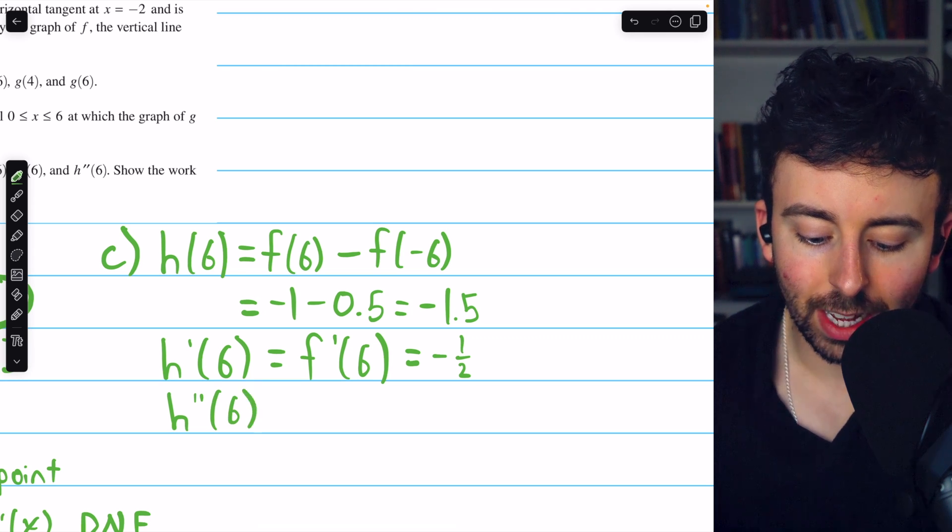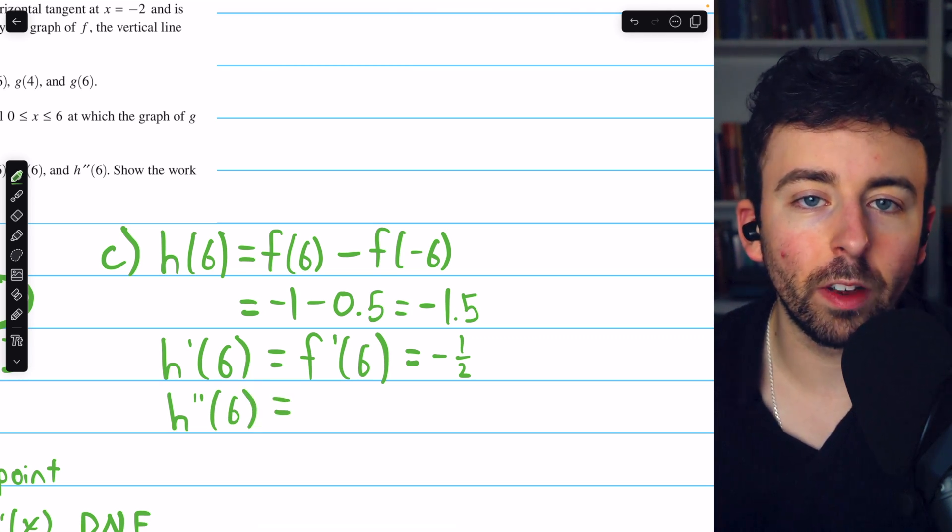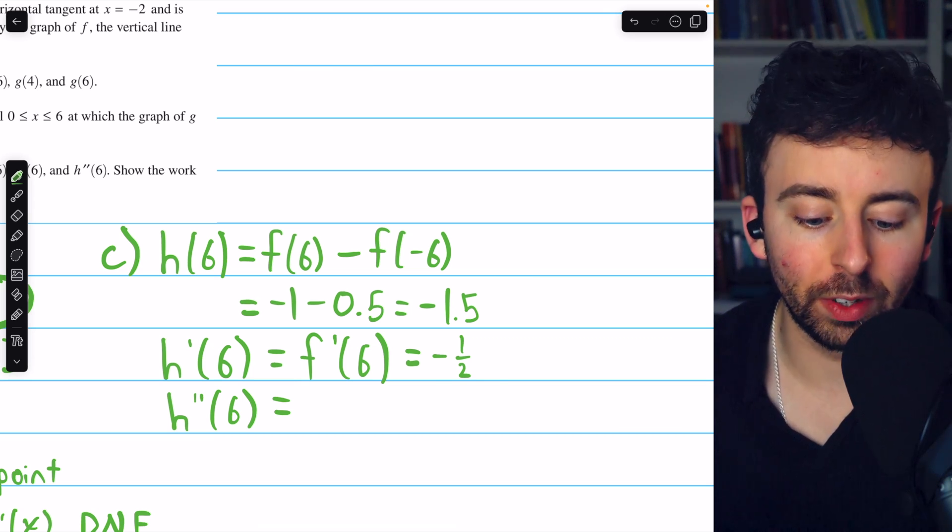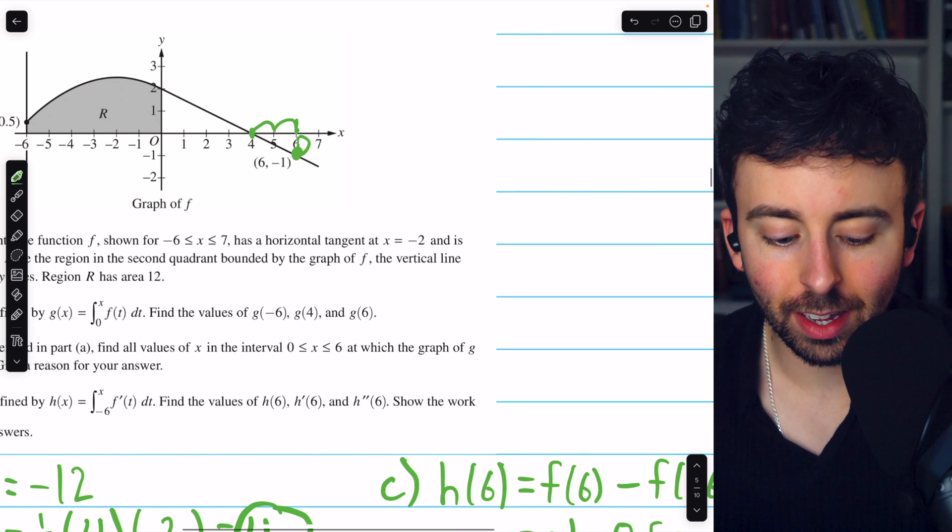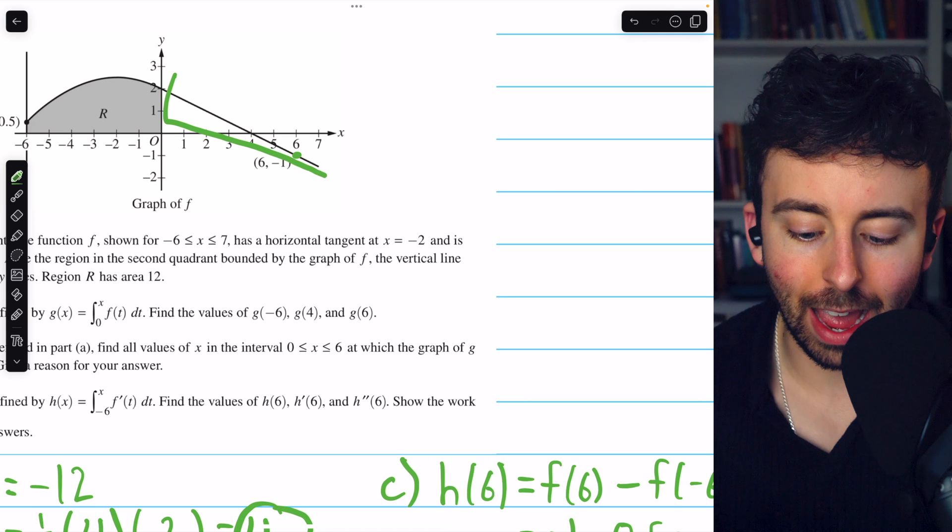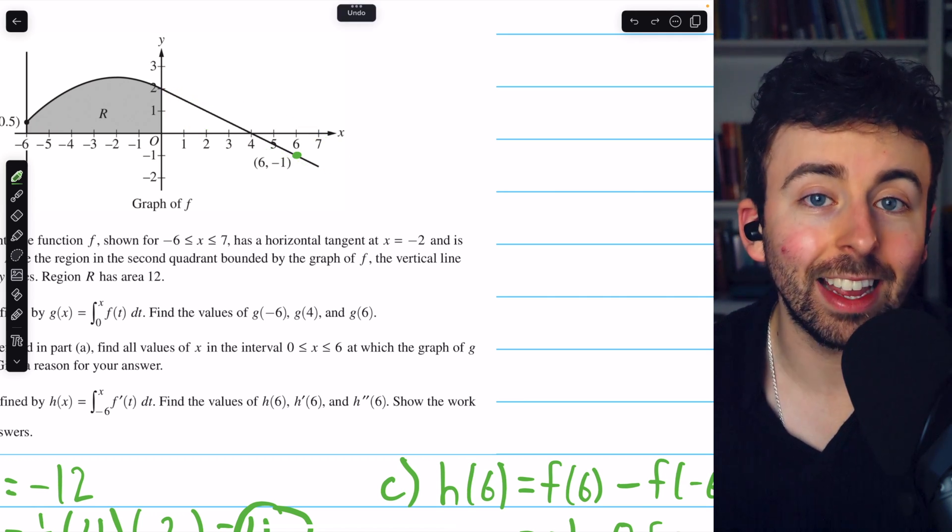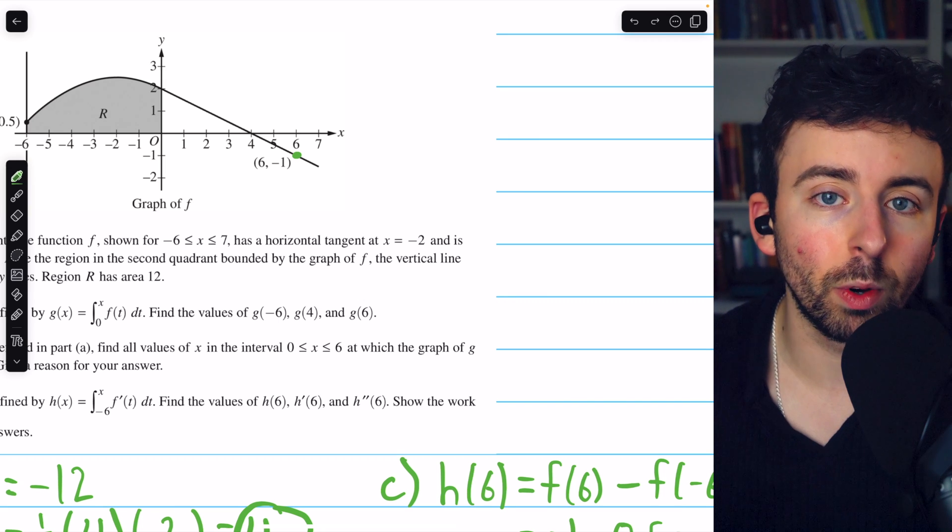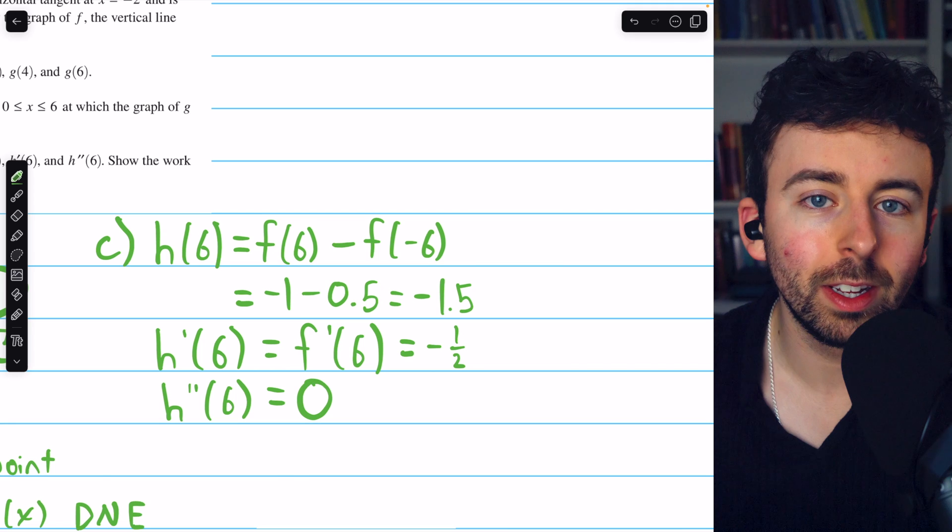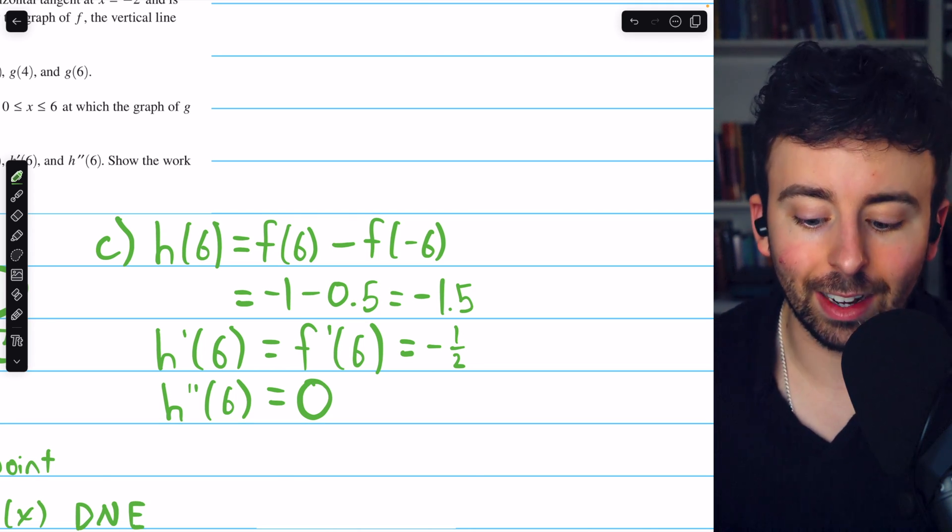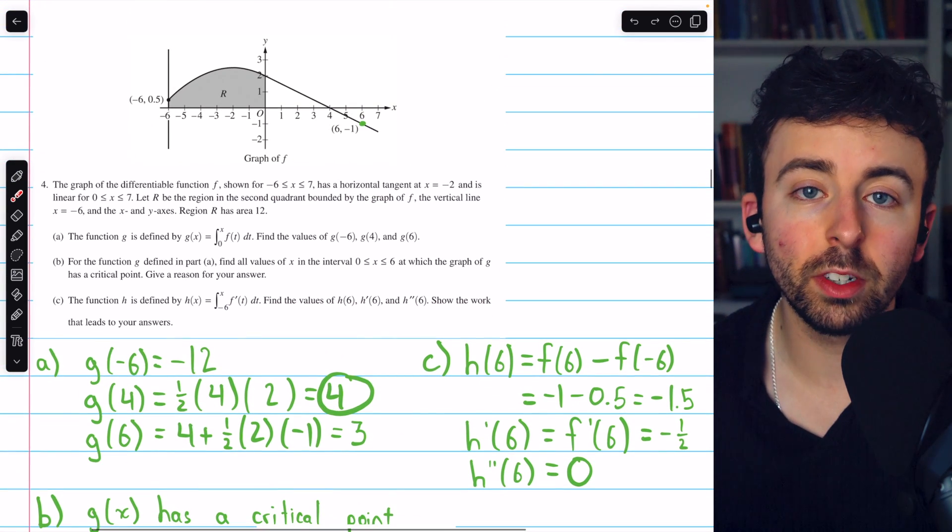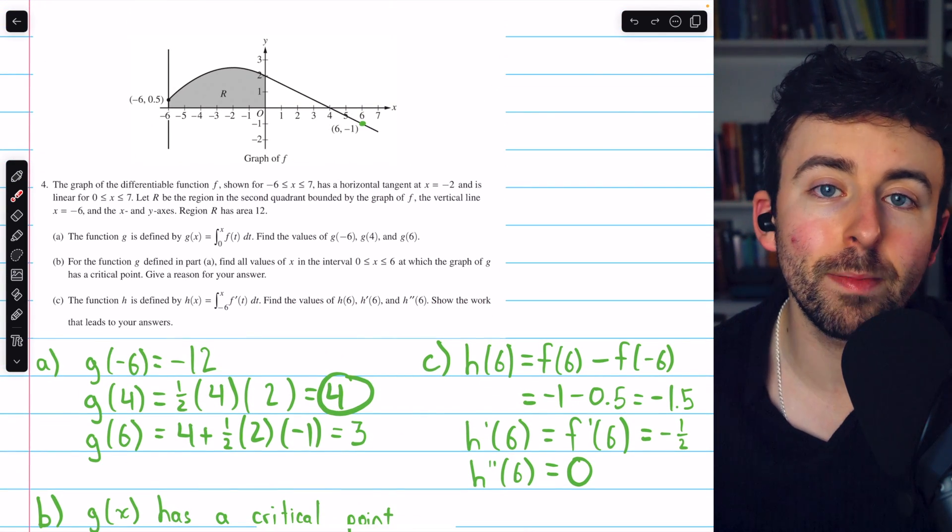Finally, h double prime of 6, that's the rate of change of the rate of change of f, the rate of change of the derivative of f, at x equals 6. And if we look at f at x equals 6, we know that f is a line over here. Hence, it has a constant rate of change, and so its second derivative, the rate of change of its rate of change, must be 0. The derivative is not changing at all at x equals 6. It's a line with a slope of negative 1.5. And that completes our solution to free response question 4 from the 2024 AP Calc AB/BC exam.